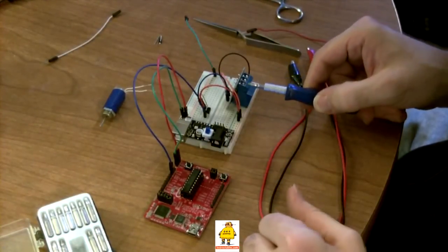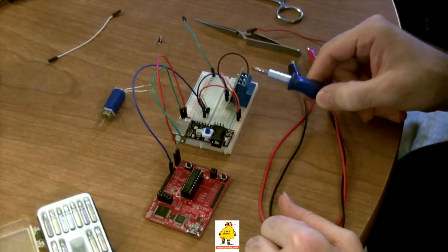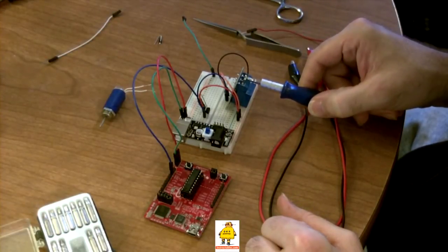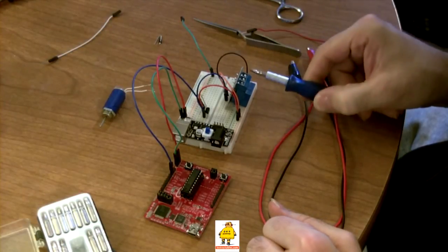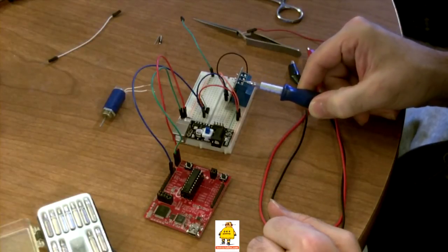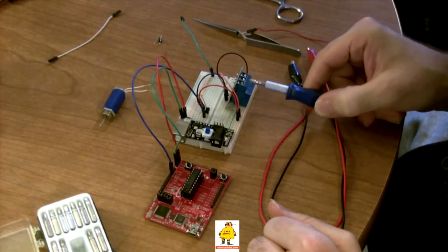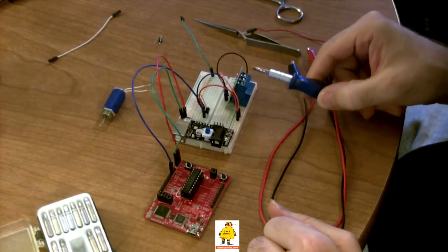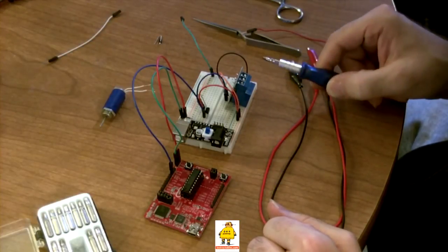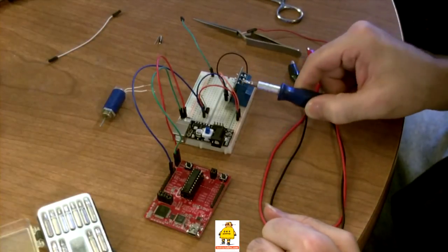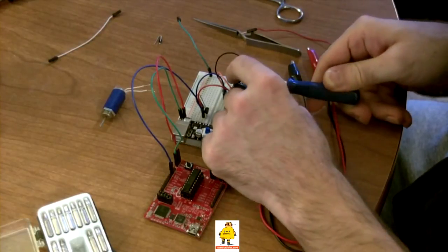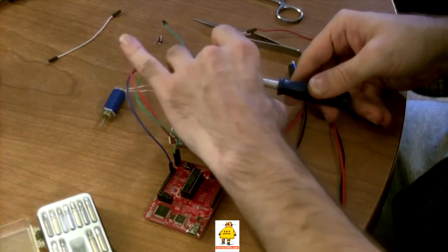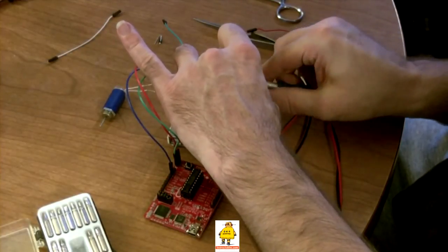Now, this is normally closed. This is our common terminal. And, this is normally open. When the relay is not energized, common is connected to here and will pass current through. When the relay gets energized, this is no longer common to this. This one becomes common to this. So, these are the two we want to use.